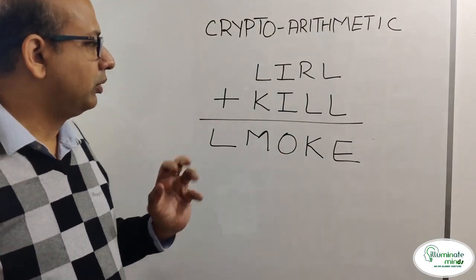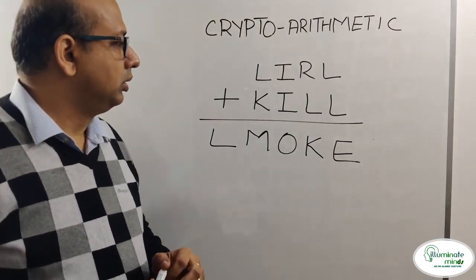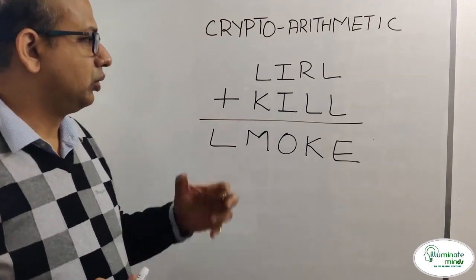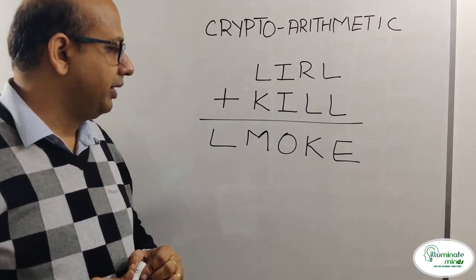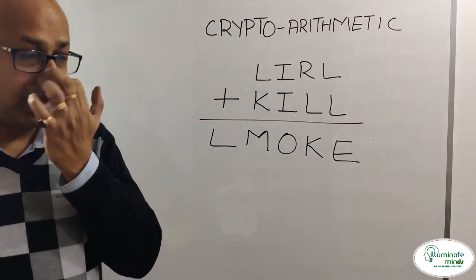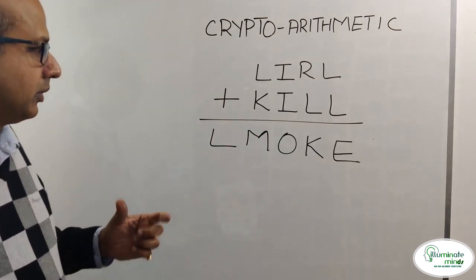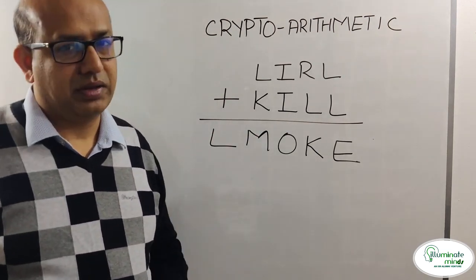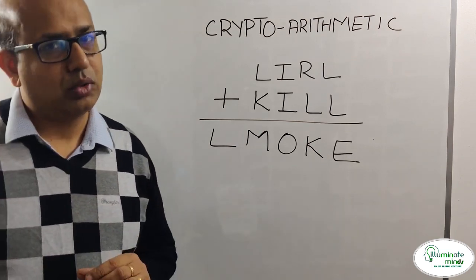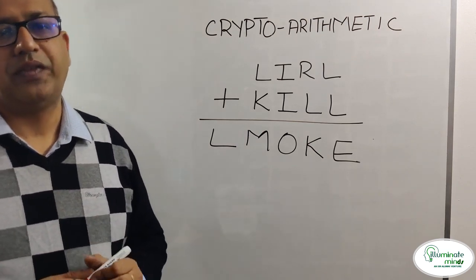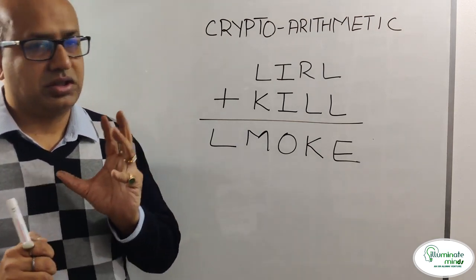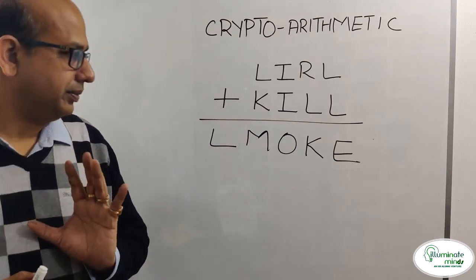We'll talk about another example on cryptarithmetic today. We have a four-digit number LIRL being added to another four-digit number KIRL, and on addition we get a five-digit number as the answer. The same rule applies: every alphabet used holds a distinct digit value.